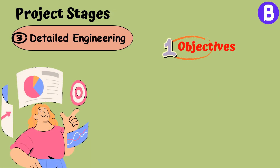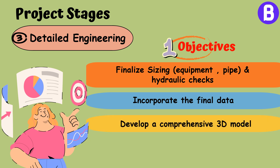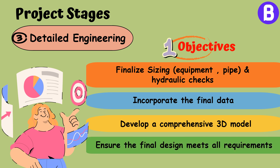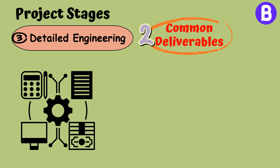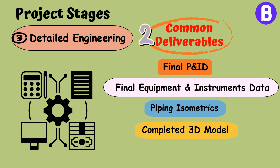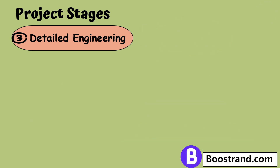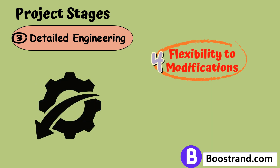The aims of the detailed engineering stage include finalizing equipment and pipe sizing along with hydraulic checks, incorporating final data from vendors, developing a comprehensive 3D model of the plant, and ensuring that the final design meets all technical, safety, and regulatory requirements. Deliverables include the final P&ID, final equipment and instrument data verified by vendors, piping isometrics, completed 3D model, and detailed construction schedule. The accuracy of this phase is around plus or minus 0 to 10 percent of the estimated budget depending on which sub-phase we are in, so flexibility to modifications is low.